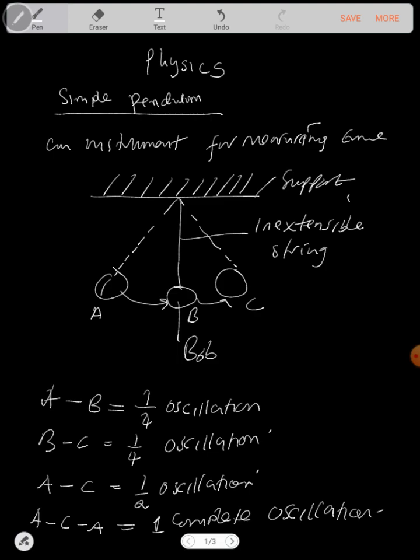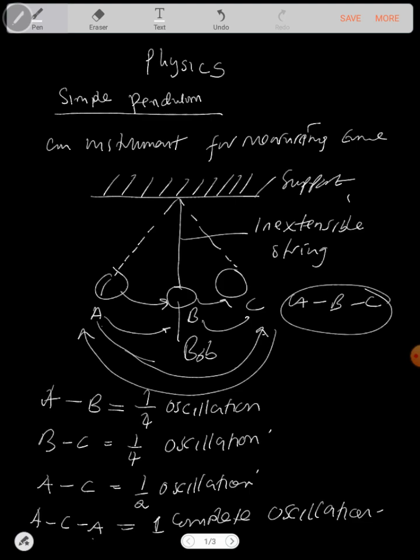In short, that's your frequency. So A to B is a quarter. Even B to C is a quarter. But when you move from A to C, you pass B and go to C, you make a half oscillation. But when you move from this side and come back again to A, which is this part, you make one complete oscillation.